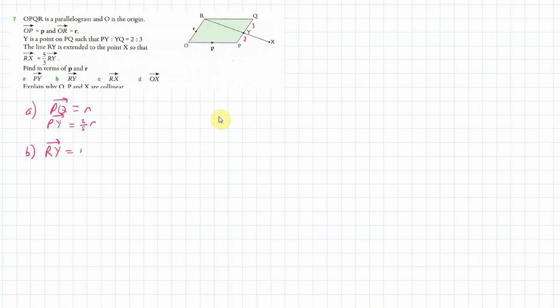Now let's look at R to Y. Well, to get R to Y, I'm going to go R to O, plus O to P, plus P to Y. So I'm going like that. Now R to O is minus R, O to P is P. And then I've got that two fifths R from my previous question. So all up, that means we have negative three fifths R. That's very messy. Negative of three fifths R plus P.